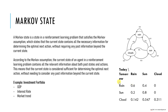For example, if today is rainy, there is a 60% chance that tomorrow will be rainy too, a 40% chance it will be sunny, and 0% chance it will be cloudy. For sunny, there is a 20% chance it could be rainy tomorrow, an 80% chance it could be sunny tomorrow, and 0% chance it could be cloudy. For cloudy, there is a 14% chance it could be rainy, a 54% chance it could be sunny, and a 31% chance it could be cloudy.